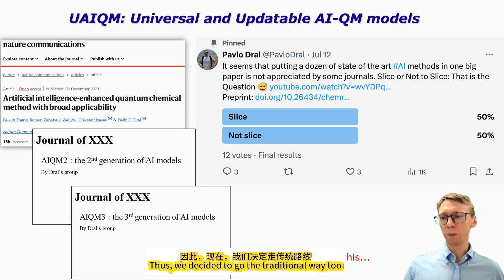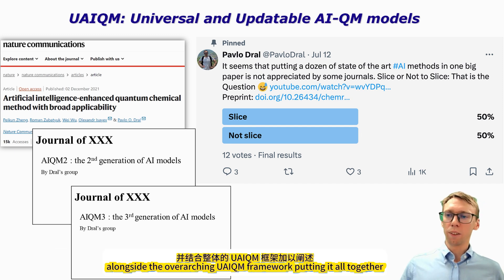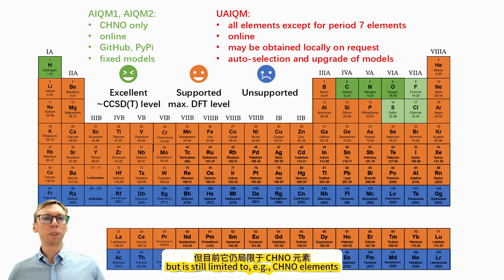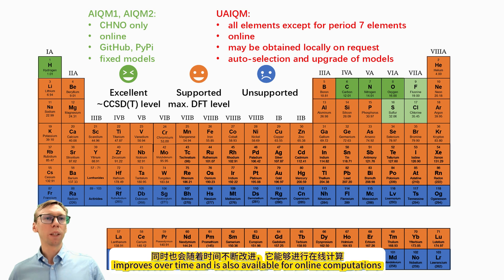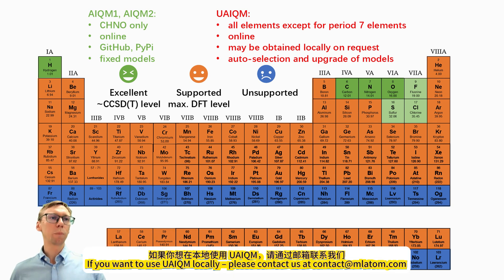Thus, we decided to go the traditional way too and publish separate accounts on the individual models and know-hows, alongside the overarching UA-IQM framework. To summarize: AIQM2 can be installed easily via PIP and is available on GitHub, but is still limited to CHNO elements. UA-IQM is more powerful, supports the full periodic table, improves over time, and is available for online computations, but is not available on GitHub or PIP. If you want to use UA-IQM locally, please contact us at mlatom.com.